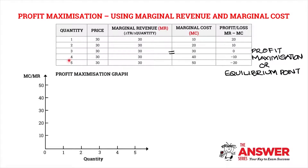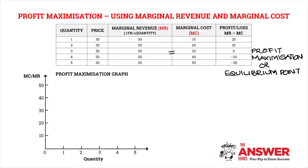At quantity 4, my marginal revenue is 30 rand, my marginal cost is 40 rand, and that means that a loss has been incurred of 10 rand. At quantity 5, my marginal revenue is 30 rand, my marginal cost is 50 rand, and that means that a loss has been incurred of 20 rand.